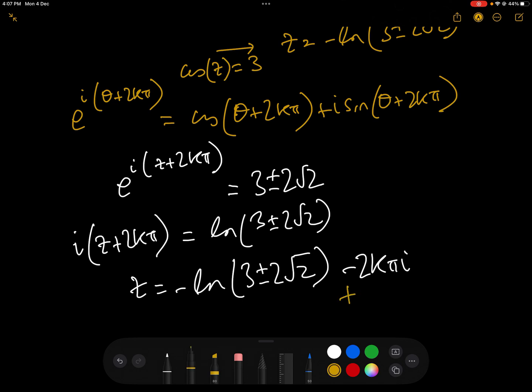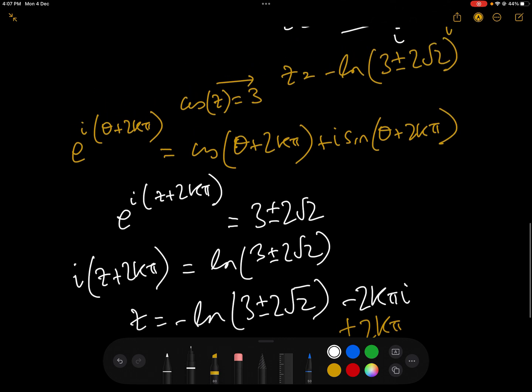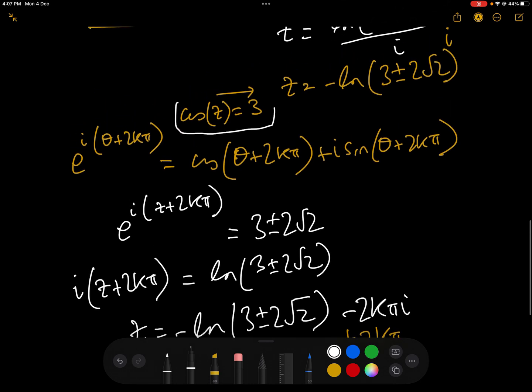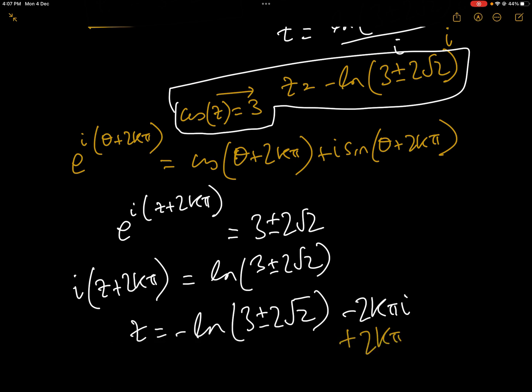or if we want to put it a better way, plus 2kπ, just by multiplying negative. And so in actual fact, the complete solution, even though the solution to cos(z) = 3 is z = -i·log(3 ± 2√2)